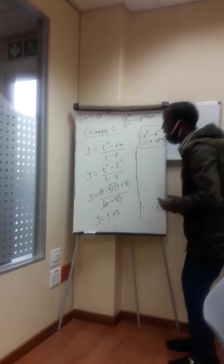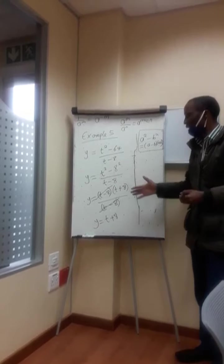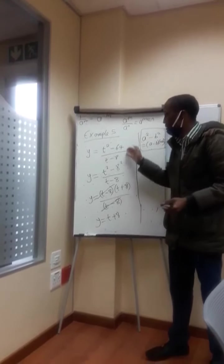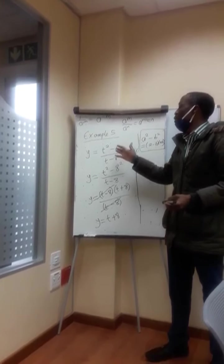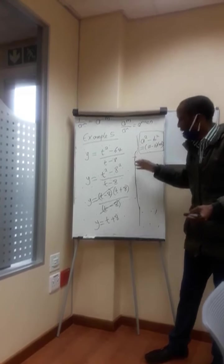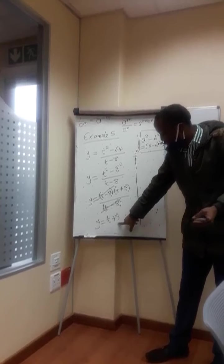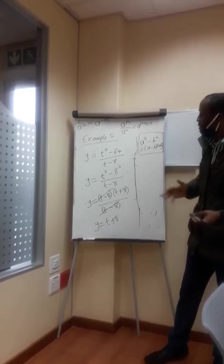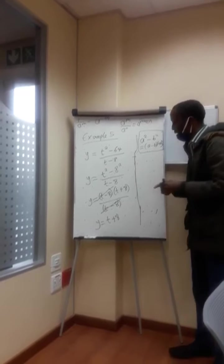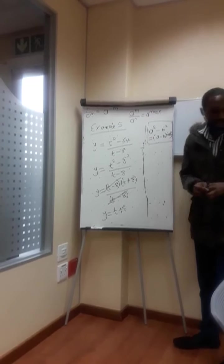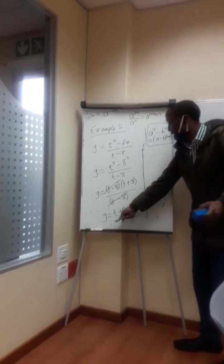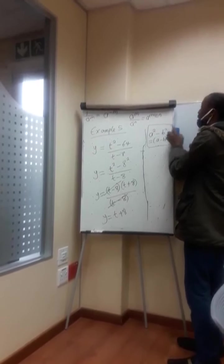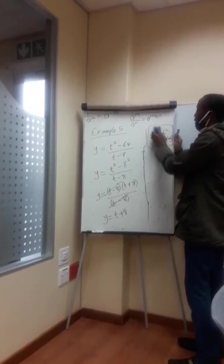So you see that based on this simplification using the difference of two squares rule, we have been able to simplify this mathematical function — which is y equal to t squared minus 64 divided by t minus 8 — and it is now simplified to become y equal to t plus 8, using this basic rule of simplifying mathematical equations.